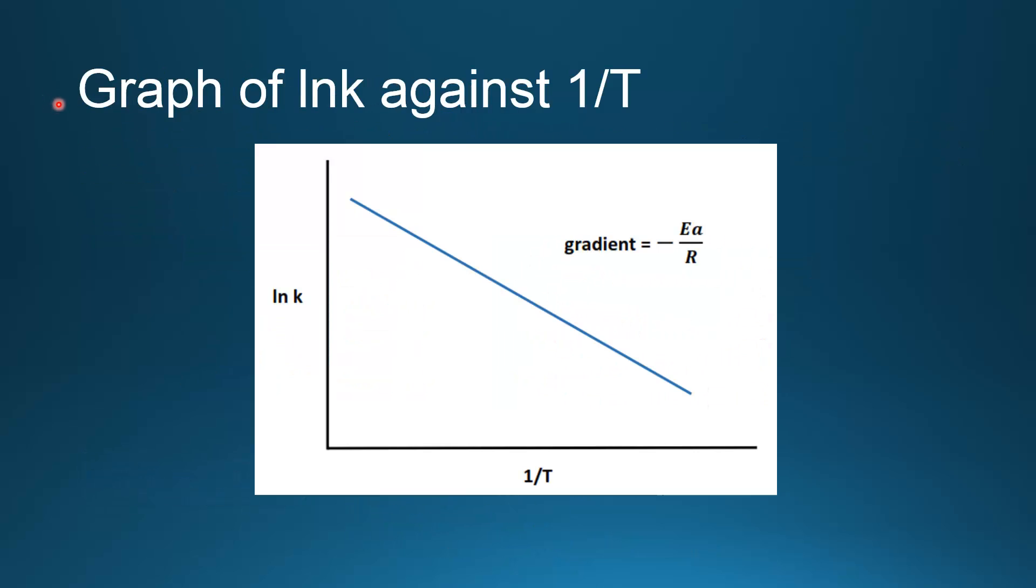Here we have a graph of ln k against 1/T. ln k is on the y-axis, 1/T on the x-axis. If we plot a graph of ln k against 1/T, we have a straight line.